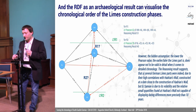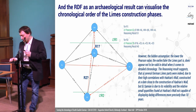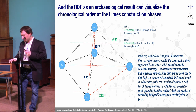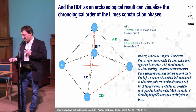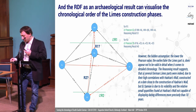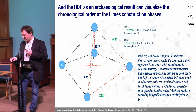Coming back from the technical stuff to a bit of archaeology: the RDF as an archaeological result can be visualized in a chronological order of the Limes construction phases. However, the hidden assumption — that the lower the Pearson value the earlier or later the Limes part is — does not appear to be valid in detail when it comes to a detailed chronology. The reasoning results suggest that several Limes parts, due to their high correlations with Hadrian's Wall, were constructed at a date close to the construction of Hadrian's Wall. But Samian, due to its relatively small quantities found at Hadrian's Wall, is incapable of displaying dating differences more precisely than 10 years.